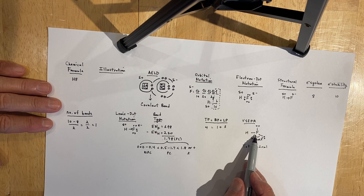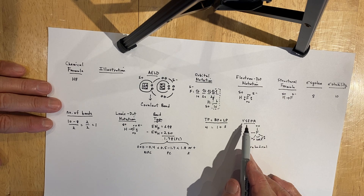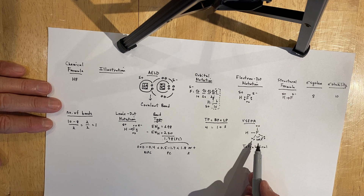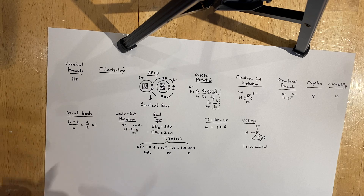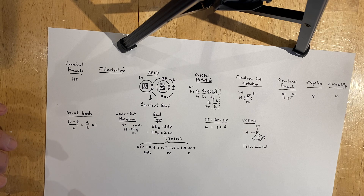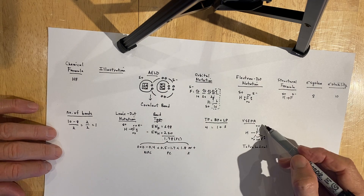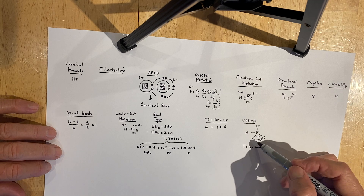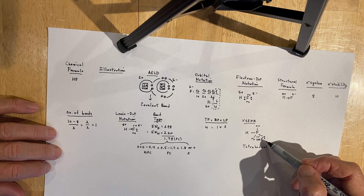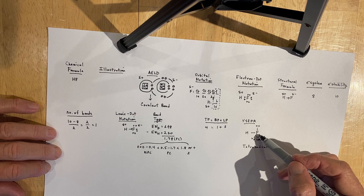VSEPR, or valence-shell electron pair repulsion theory, predicts that the arrangement of electron pairs around a central atom will be such that the electron pairs repel themselves to positions of minimum repulsion, because electron pairs all carry negative charges and similar charges repel. VSEPR theory seeks to predict the arrangement of electron pairs around an atom that is not bonded.